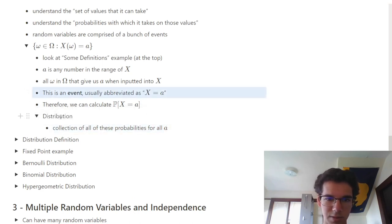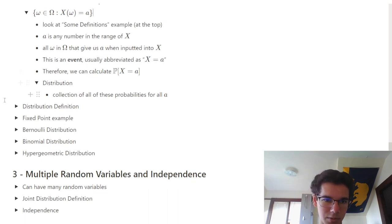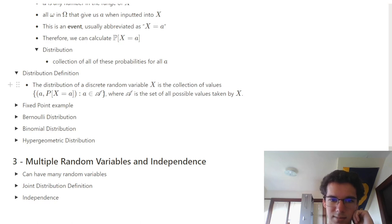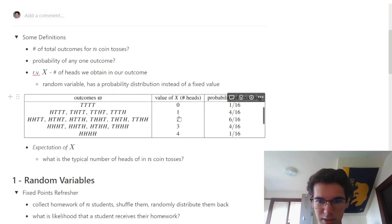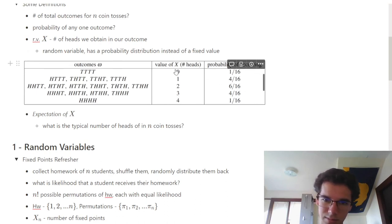The distribution of a discrete random variable X is the collection of values — all the A's it can be, where A is the set of all possible values. For the four coin flip scenario, here are all the possible A's and all the probabilities: probability of 0 heads is 1/16th, probability of 1 head is 4/16ths. If you sum up all these probabilities, they total to 1.